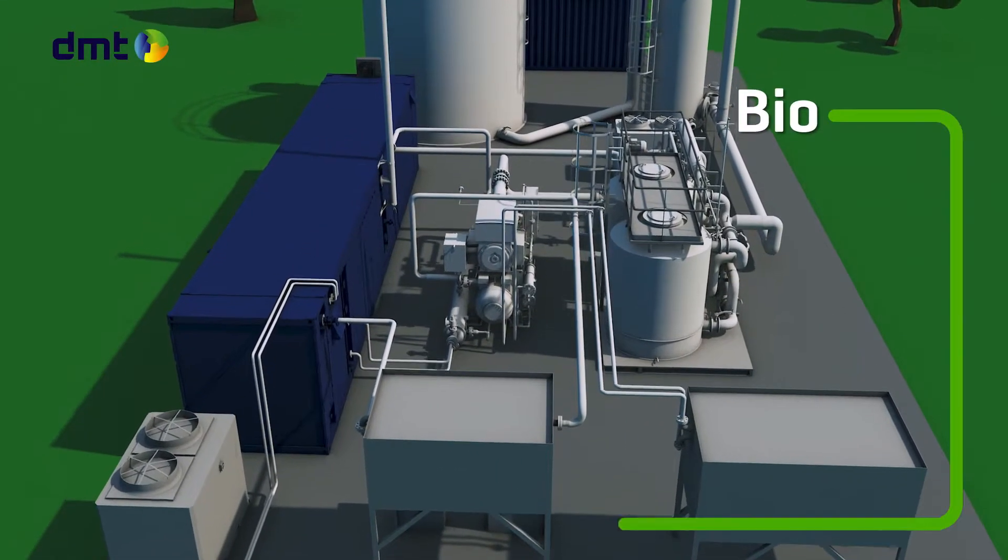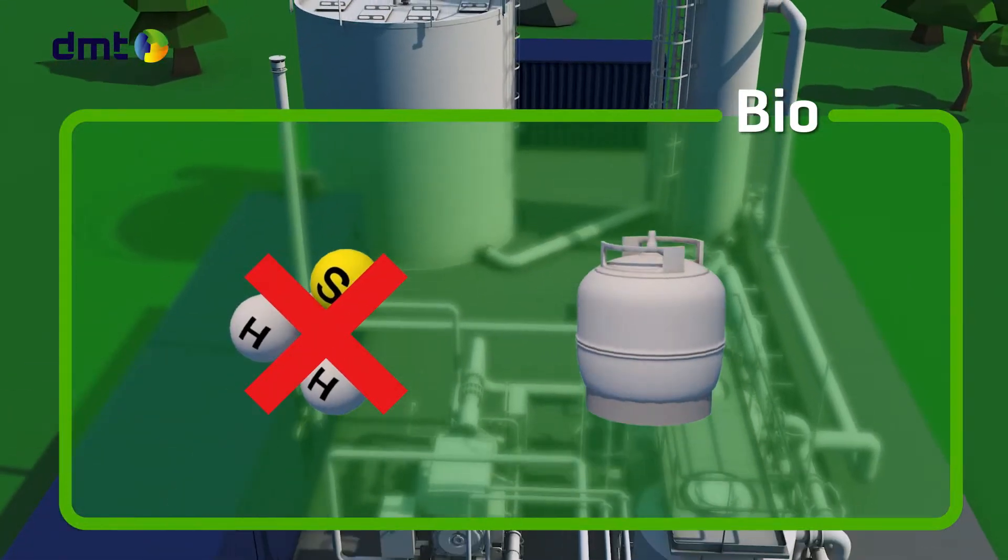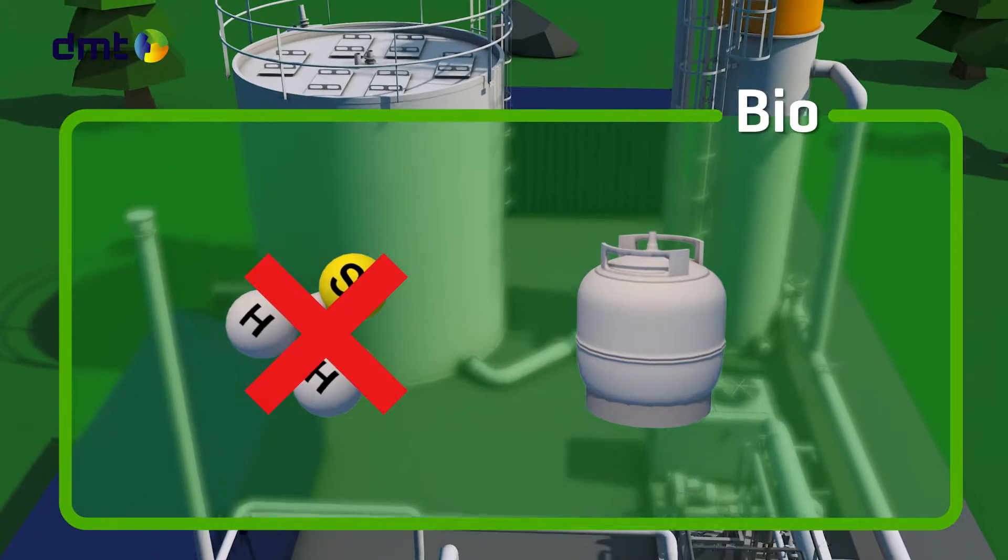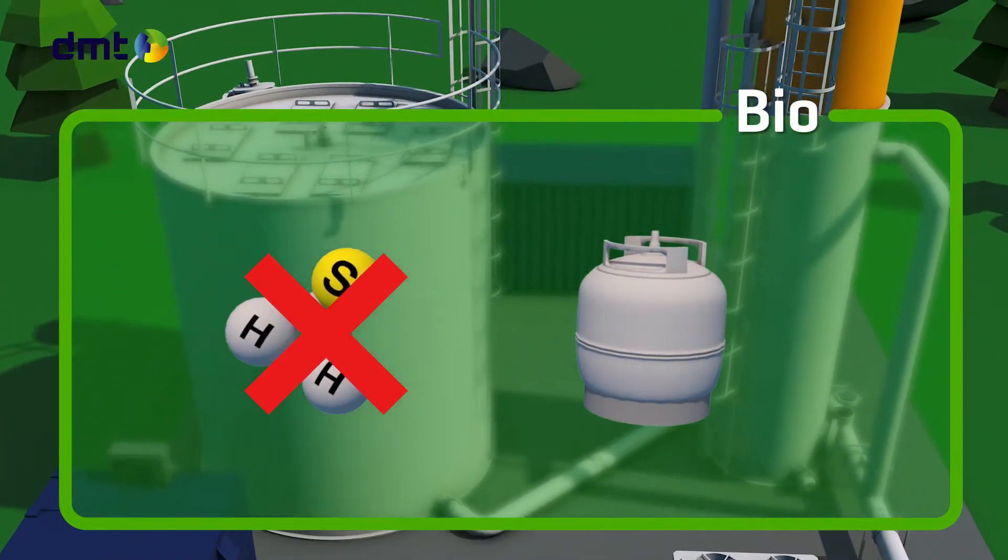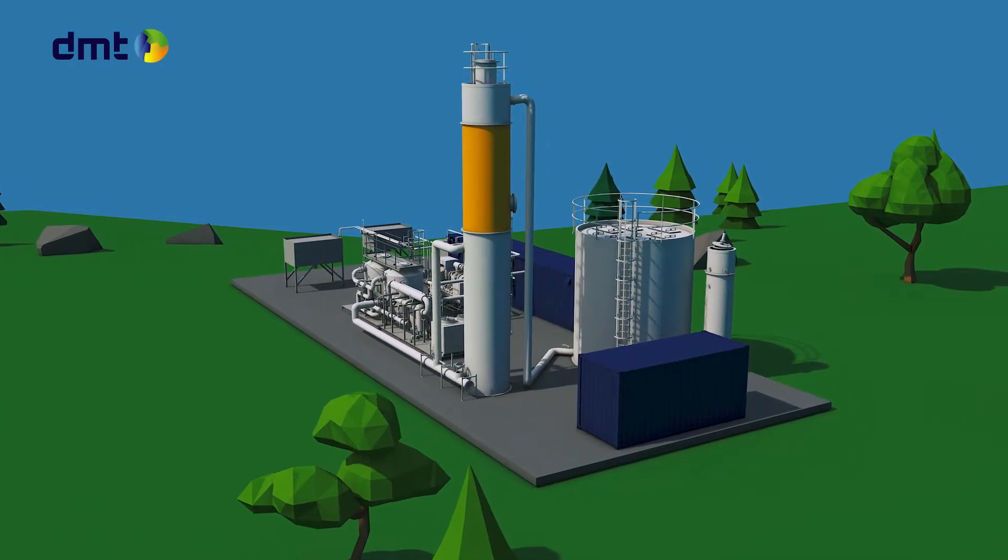DMT's Sulfurex BR is a biological process for the removal of hydrogen sulfide from gas streams. This environmentally friendly technology guarantees H2S removal with high uptime and enables industries to meet stringent gas quality requirements.